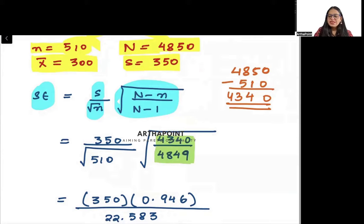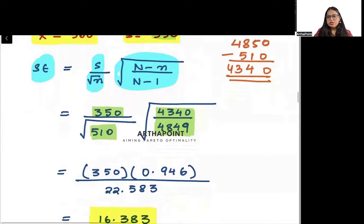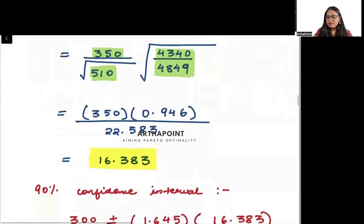Right? My standard deviation is given to me as 350 and my sample size is 510. So when I put these values, I will go ahead and get my standard error as 16.383.